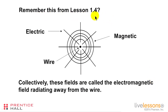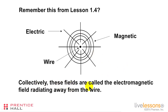From lesson 1.4, we had this figure discussing the fact that if there is a current running through a wire, and especially if there is a changing current running through a wire, then there will be an electric field radiating away from the wire and there will be a magnetic field around the wire which also radiates away. Collectively, these fields are called the electromagnetic field radiating away from the wire.